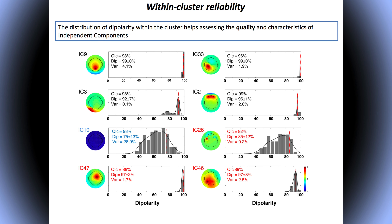Looking at other components, IC3 has some kind of bimodal distribution, so the dipolarity is not always at its highest — around 95%. IC10, which is likely to represent more of a line noise artifact, is very tightly clustered at 98%, but it is not very dipolar and explains a lot of the data — about 30%. Other components have lower quality indices, like 86% or 92%. This tells us how reliable the different components are.